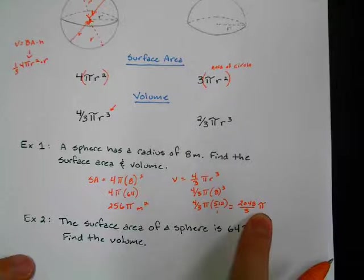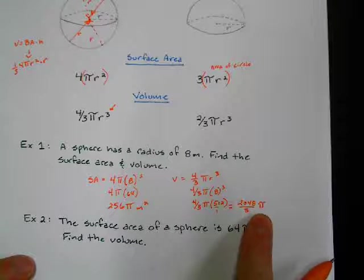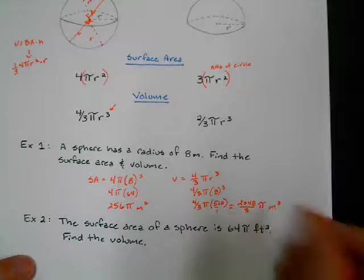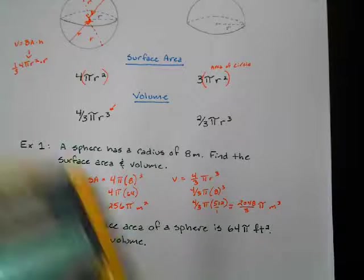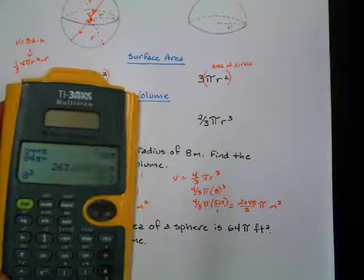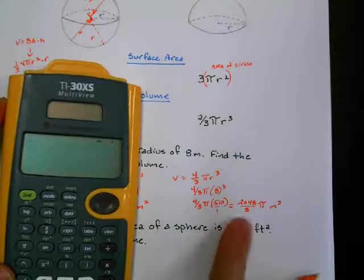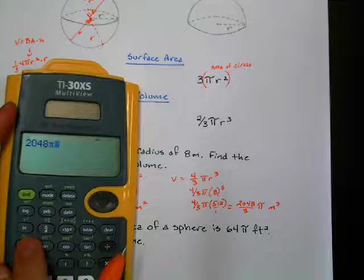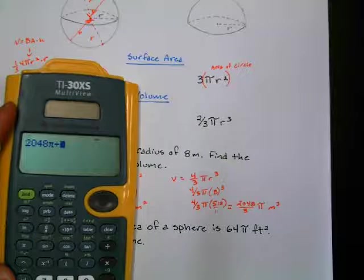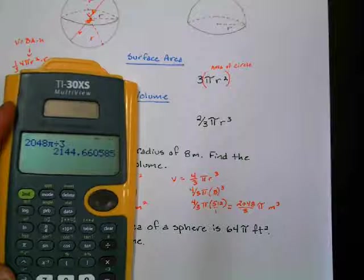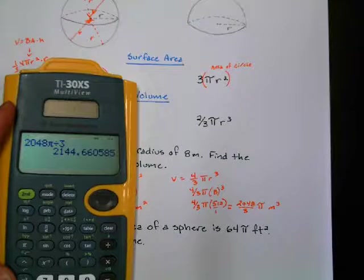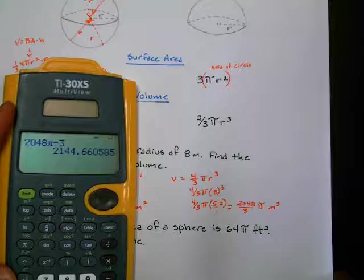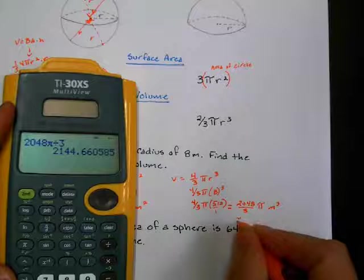Now, if you wanted, again, to do an approximation of an answer, remember, you would just take your calculator like we did in the last section, and we'd just do 2048π divided by 3. It'd give us 2100 and about 45. So this is approximately 2145.